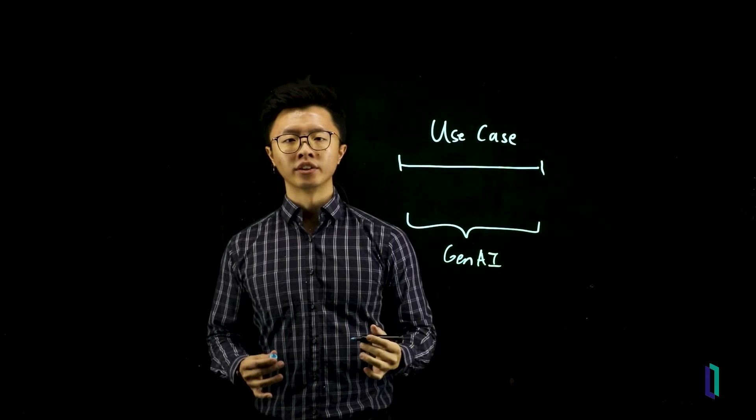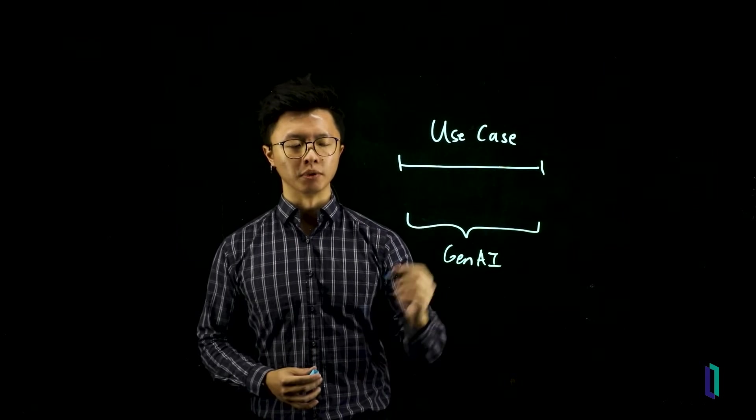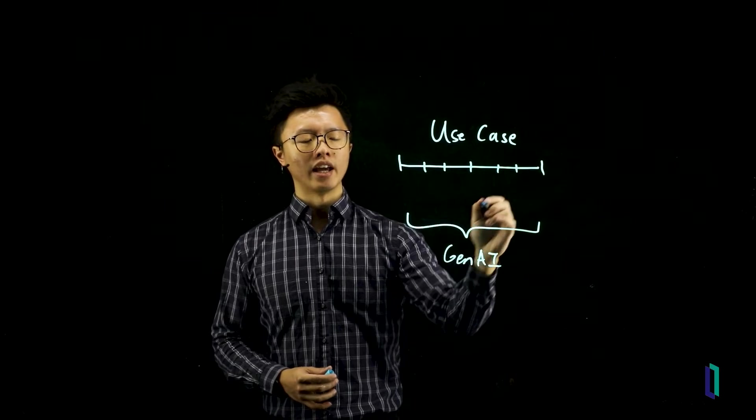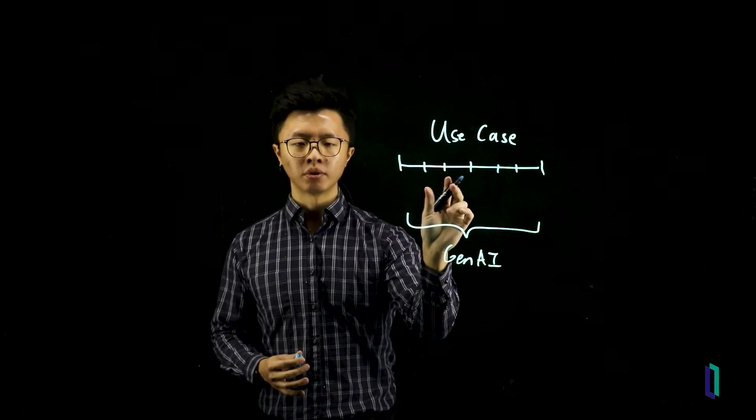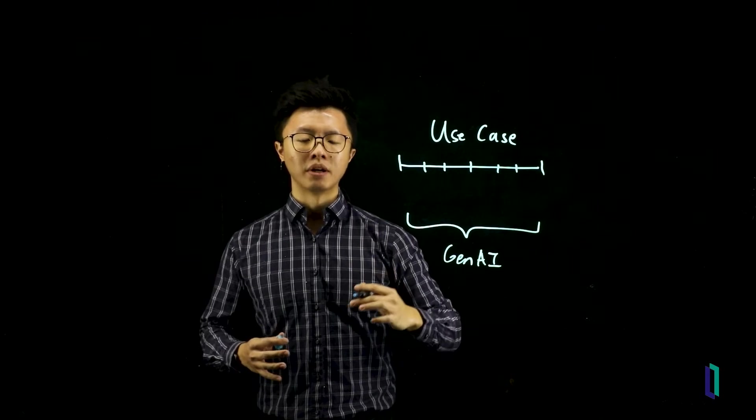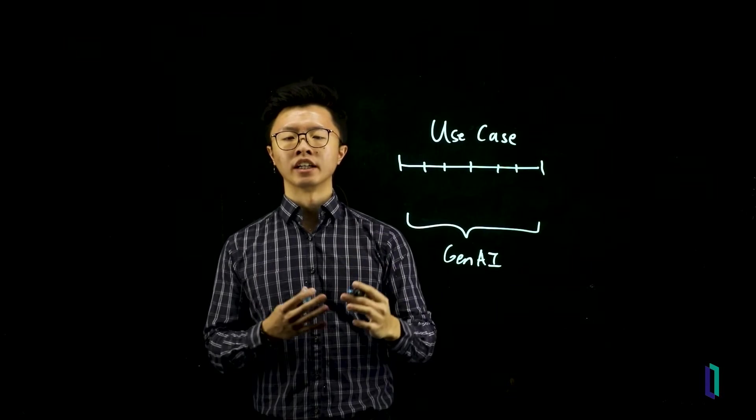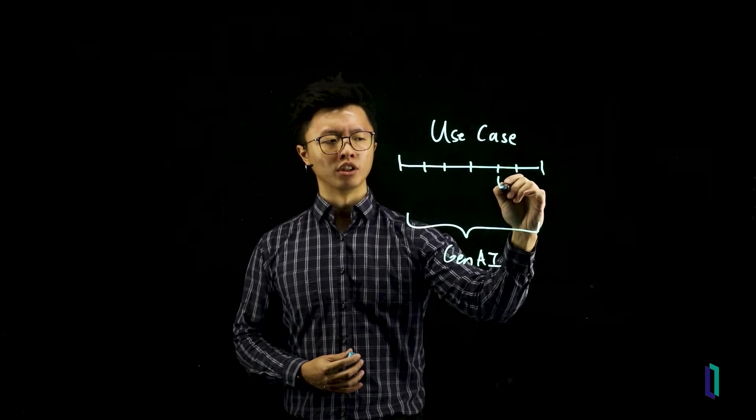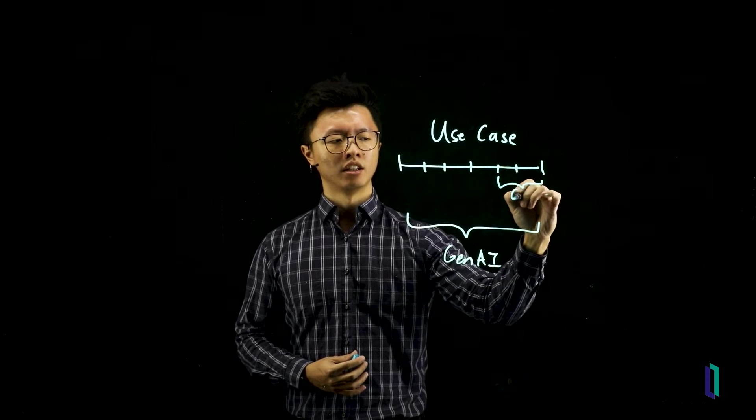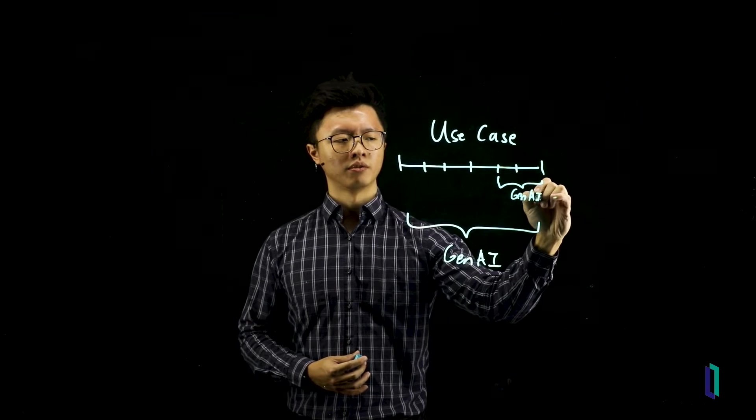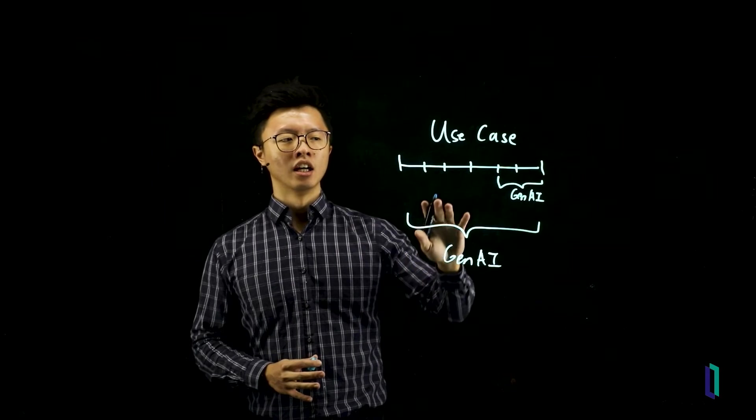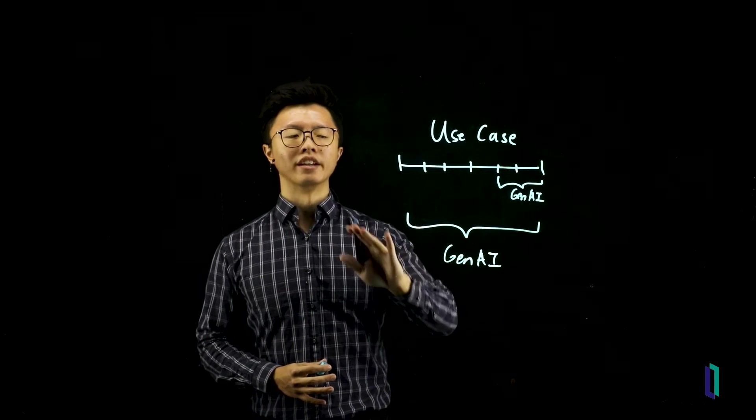...you typically want to break down the use case as much as possible by identifying sub-problems within the use case, and then understanding which sub-problem can benefit the most by implementing a Gen AI system. And so your Gen AI system may simply only solve this portion. And this is most often going to be more effective than applying Gen AI to the entire use case.